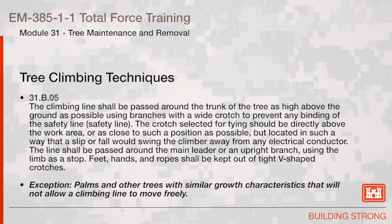The climbing line shall be passed around the trunk of the tree as high above the ground as possible, using branches with a wide crotch to prevent any binding of the safety line. The crotch selected for tying should be directly above the work area or as close to such a position as possible, but located in such a way that a slip or fall would swing the climber away from any electrical conductor. The line shall be passed around the main leader or an upright branch, using the limb as a stop. Feet, hands, and ropes shall be kept out of tight V-shaped crotches. Exception: palms and other trees with similar growth characteristics that will not allow a climbing line to move freely.